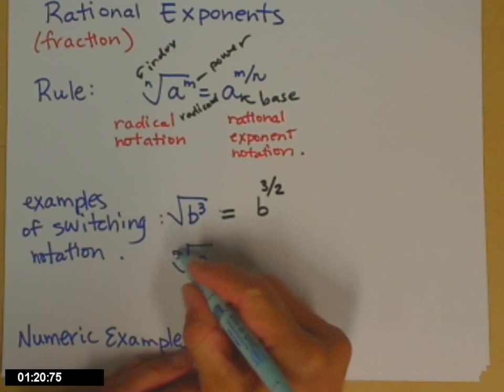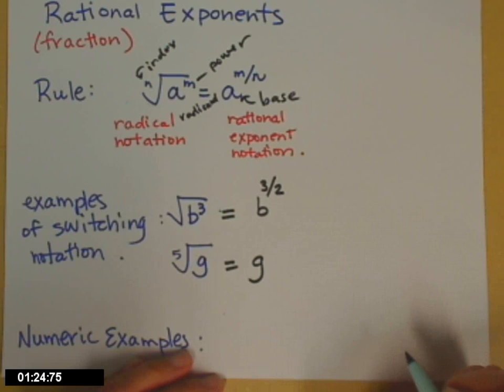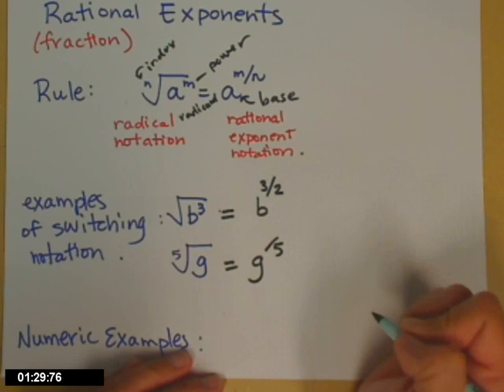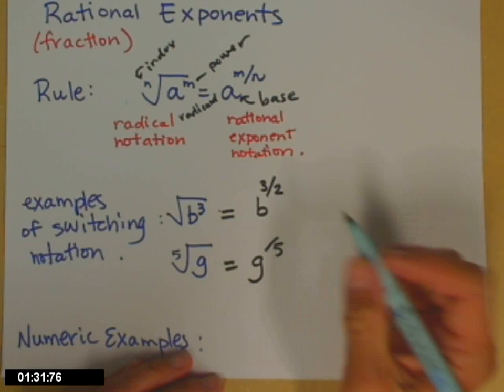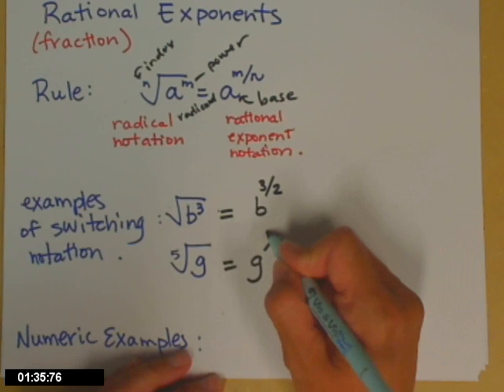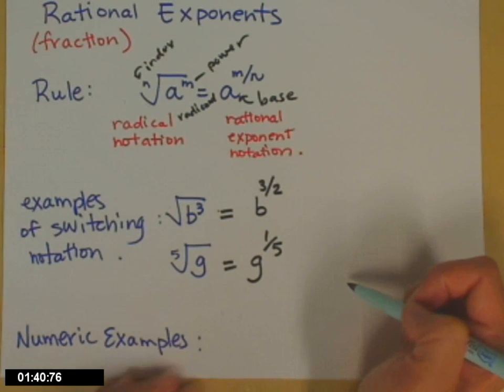For the fifth root of g, to write that with a fractional exponent, it is g to the, so five is the index, so that will be playing the denominator role, and the numerator is the power of g. And again, when one isn't written, it's an understood one. So the fifth root of g is the same thing as g to the one-fifth.